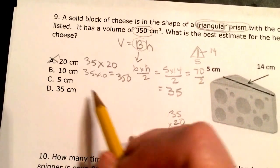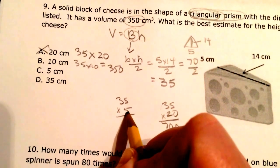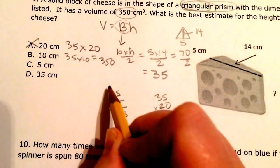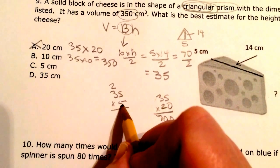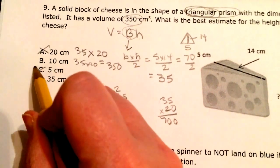Well, let's double check. Let's try 35 times 5. 5 times 5 is 25. Carry my 2. 30 times 5 is 15, 16, 17. 175. Nope, that's not it.